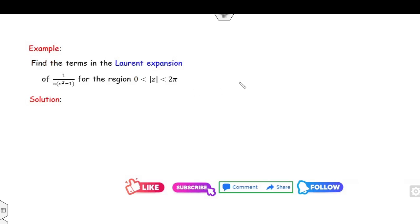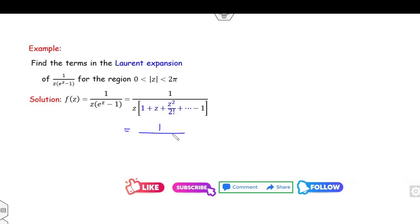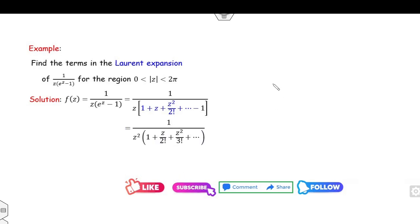Look at the next one: find the terms in the Laurent expansion of (e^z - 1)/z². Clearly at z = 0 this value goes to infinity, so we apply the Laurent series. The expansion of e^z is 1 + z + z²/2! + … Substituting, the 1 cancels, giving (z + z²/2! + …)/z² = 1/z + 1/2! + z/3! + … Taking z as common: (1/z²)(1 + z/2! + z²/3! + …).